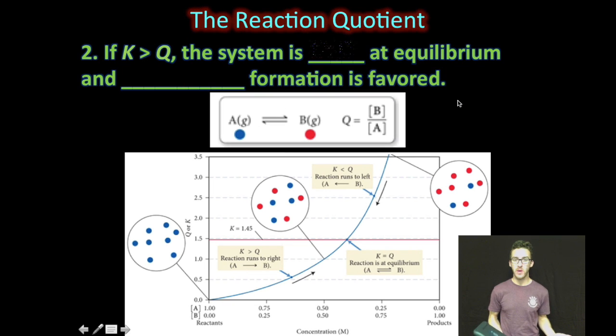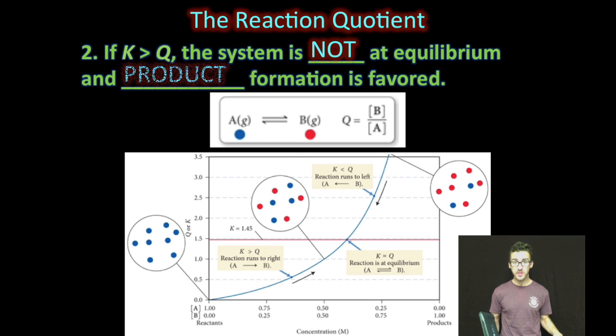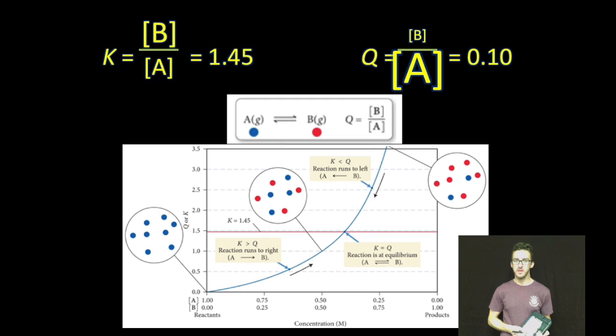Okay, so now let's think about what happens when K is greater than Q. Once again, we're not at equilibrium, but this time, product formation is favored. Let's go back to that generalized equation and think about why. Again, we're talking about the same equation at the same temperature, so our equilibrium constant is still 1.45.